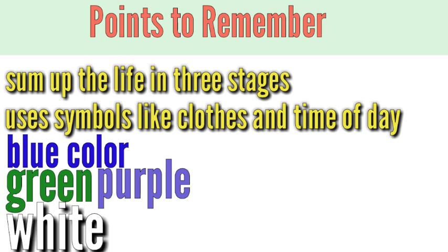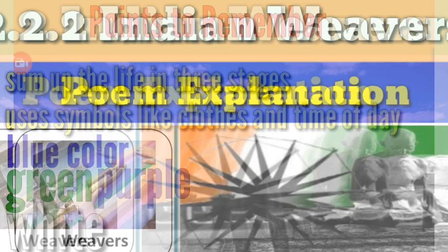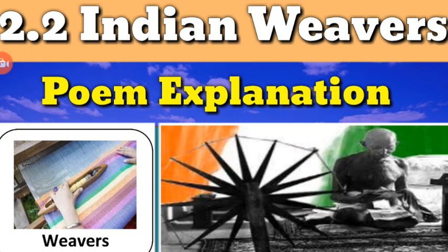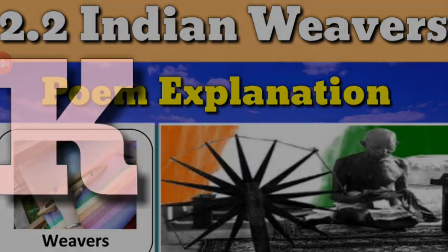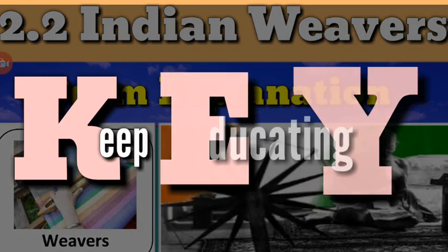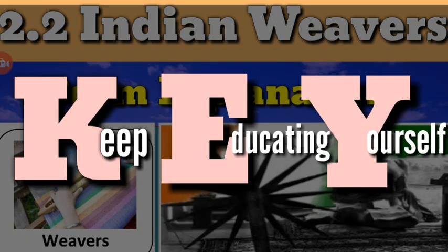White means emotions are connected with life, and when the person dies, all emotions also die. That's it for now — I hope you have understood the poem. Keep watching and keep educating yourself. Thank you very much.